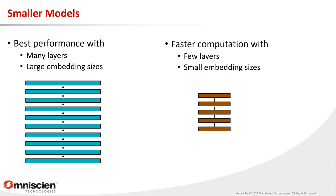One idea is to build smaller models. We know we can get the best performance with many layers of computation — the key to deep learning — and very large embedding sizes. But you can clearly get faster computation with fewer layers and smaller embedding sizes.